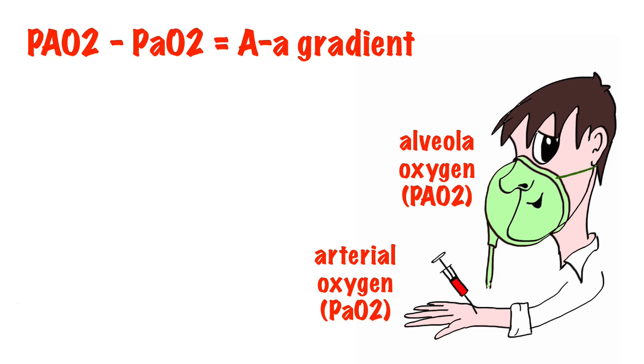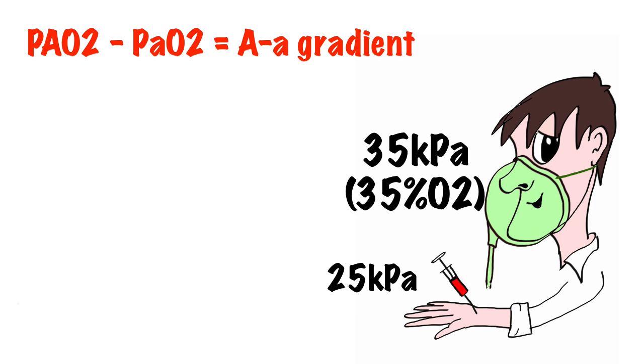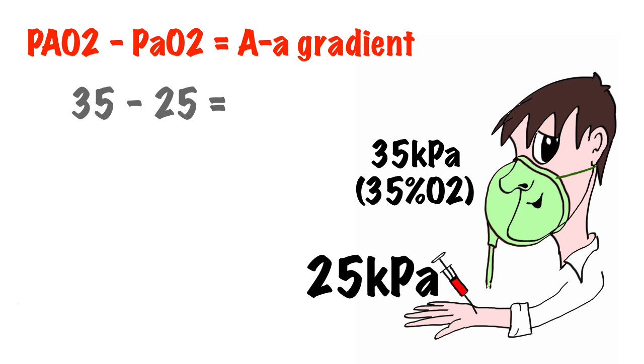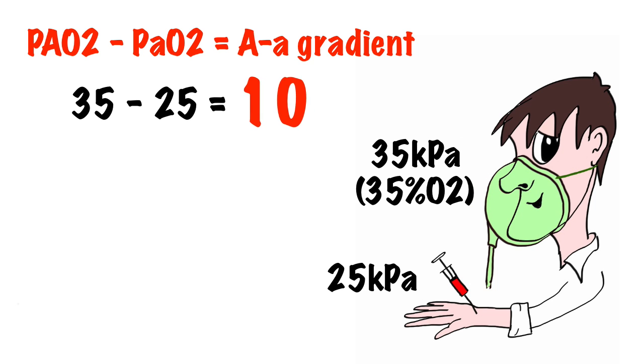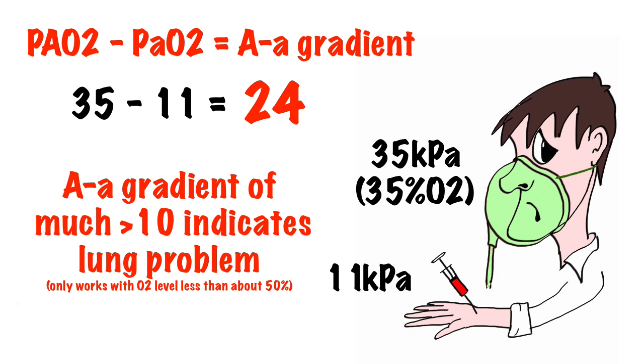We would expect the gradient or drop-off between the partial pressure of alveolar oxygen breathed in to the partial pressure of arterial oxygen we sample to be approximately 10. If this gradient is significantly greater than 10, then it indicates that there may be a problem with the patient's lungs.